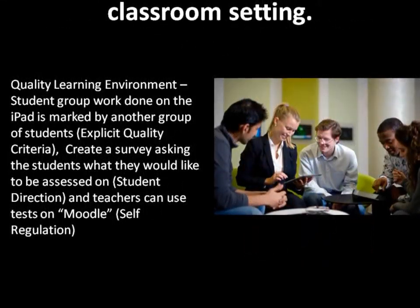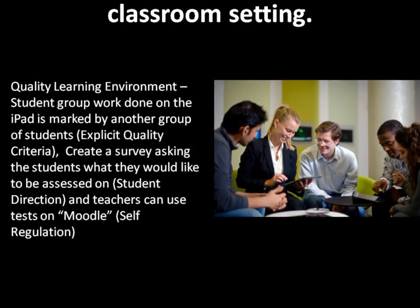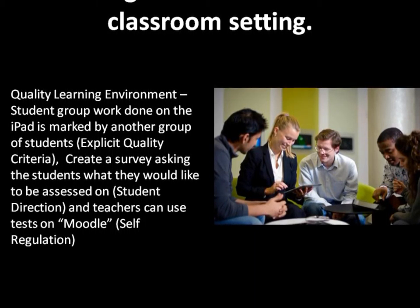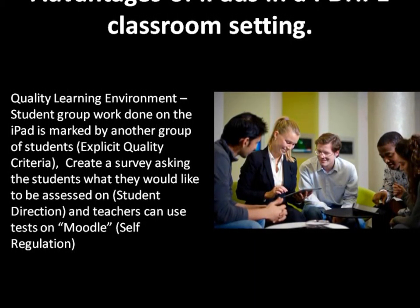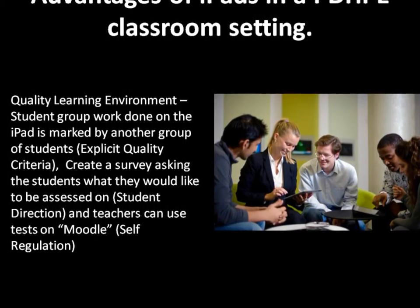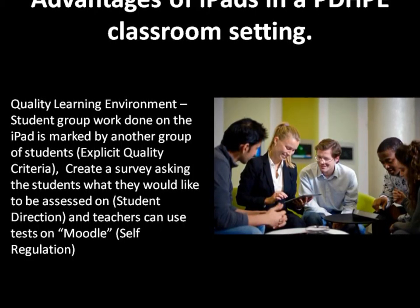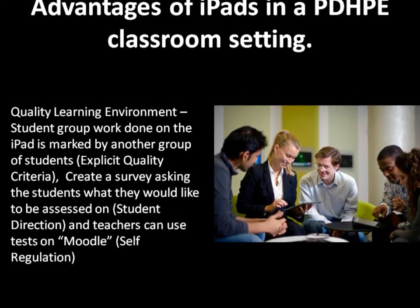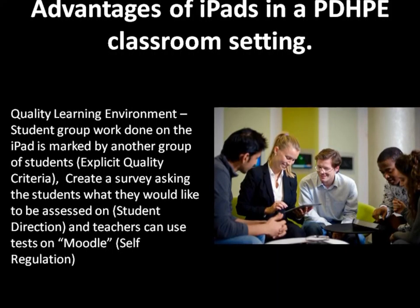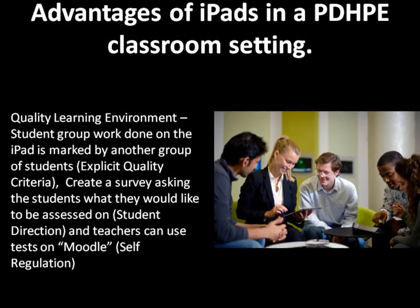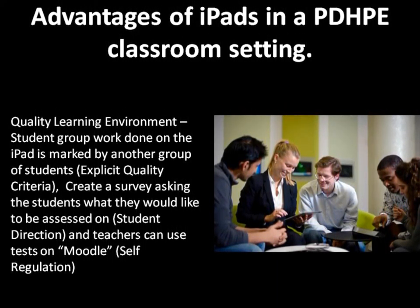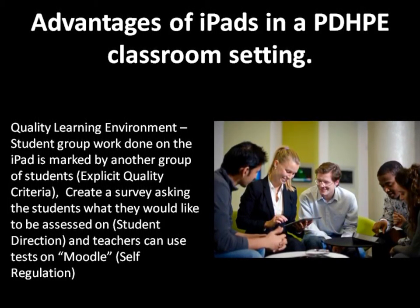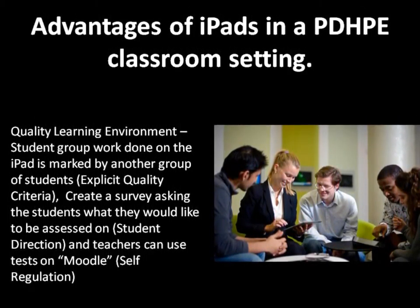Dimension 2 is the quality learning environment. The advantages in this dimension include students being able to have self-regulation by accessing set tasks or assessments on sites such as Moodle. Student direction can be achieved by presenting students with an online survey about particular assessments or practical class activities they wish to be taken. Students are also able to finish a group task and have it be marked using set criteria, which would help them achieve explicit quality criteria.